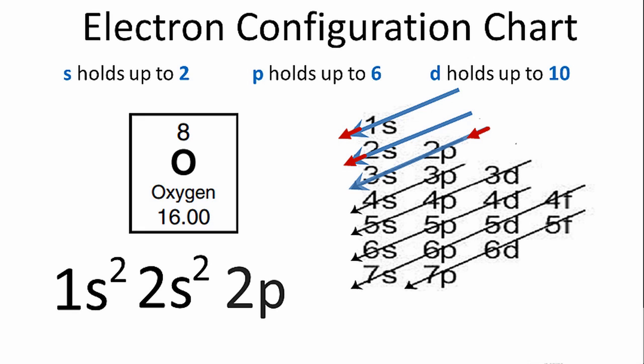We'll go down the next row, and we have the 2p. And in the 2p, we have up to 6 electrons, but we only need 4 to complete the notation for oxygen. So we'll just put a 4 after the 2p.